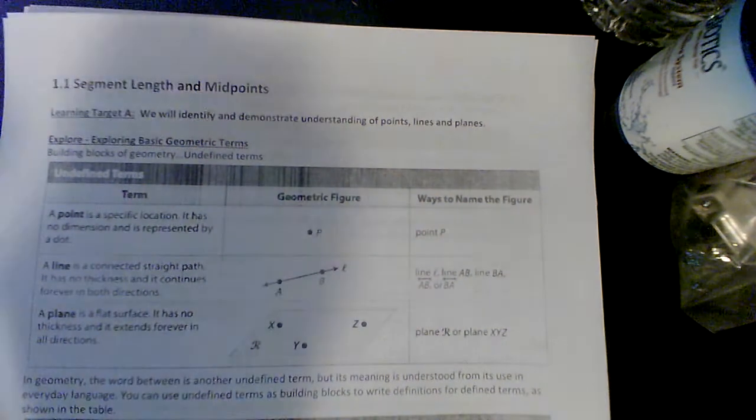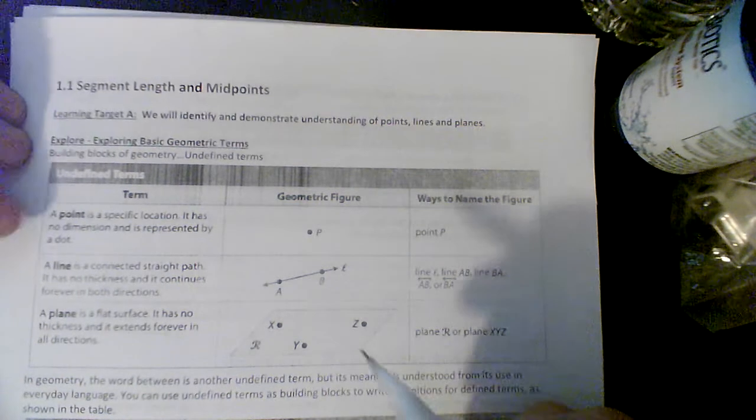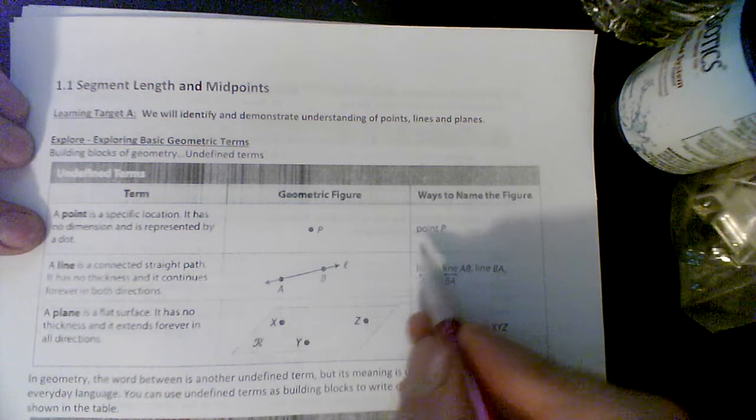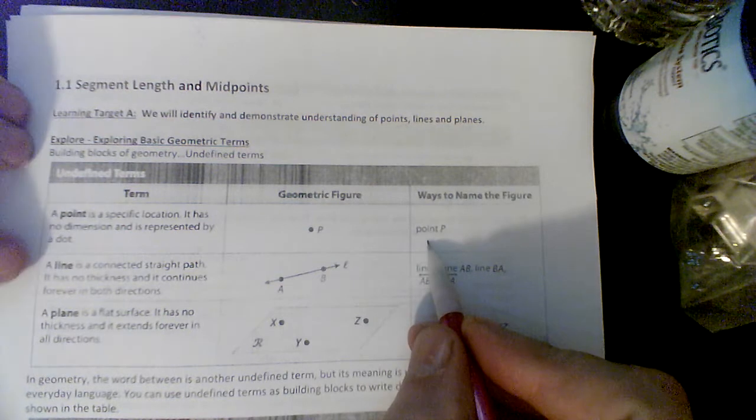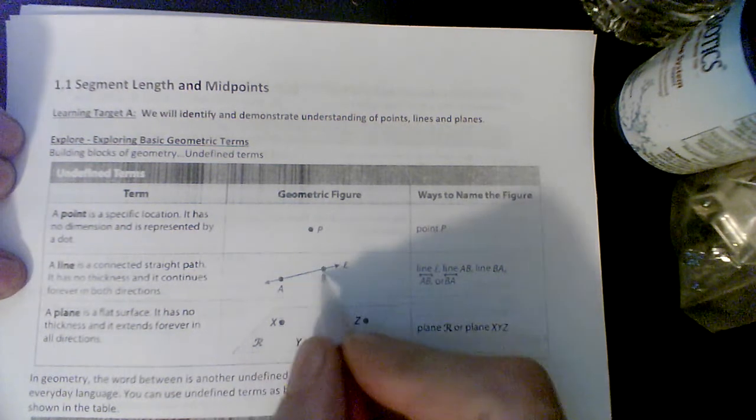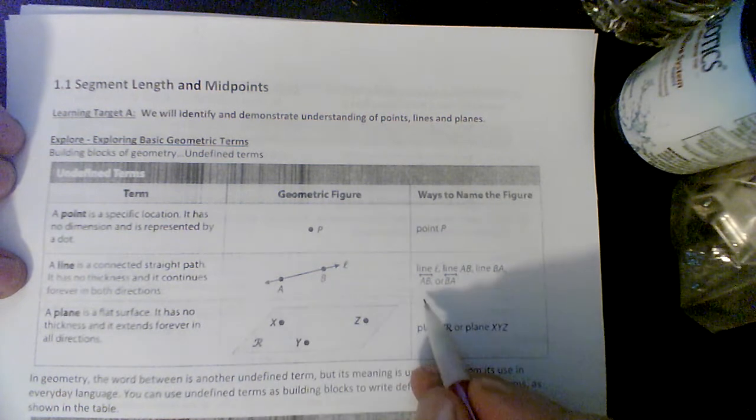All right, you guys, I want to point some stuff out. A point is a specific location. It can be drawn like this and written like this. A line is a straight line through two points or more—there's actually an infinite number of points on here. It can be drawn like this or written like this.